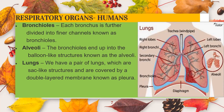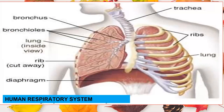Lungs are a pair of spongy, highly elastic and bag-like structures which are enclosed in an airtight thoracic cavity formed of backbone, ribs, and sternum. These lungs are covered by a double-layered membrane known as pleura. A large muscular diaphragm forms the floor of the thoracic cavity and separates it from the abdominal cavity. Lungs have numerous thin-walled and tiny air sacs called alveoli. The surface of alveoli is covered with a fine network of blood capillaries. When we breathe in, these alveoli get filled with fresh air.